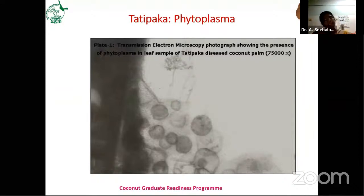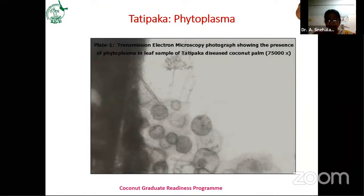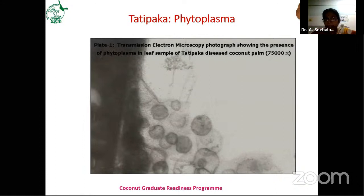Regarding Tatipaka disease caused by phytoplasma, reported in the 1990s, Tatipaka is a location in Jagannapeta in East Godavari district where it was first observed. Our senior scientist took electron microscopy images of this phytoplasma from Tatipaka-infected plants. Later, a campaign was conducted to remove all Tatipaka-infected palms — once the infected plants were removed, the disease was eliminated. Currently, Andhra Pradesh has no Tatipaka or root wilt phytoplasmal diseases in coconut, unlike Kerala, Karnataka, and Tamil Nadu where it remains a major disease.